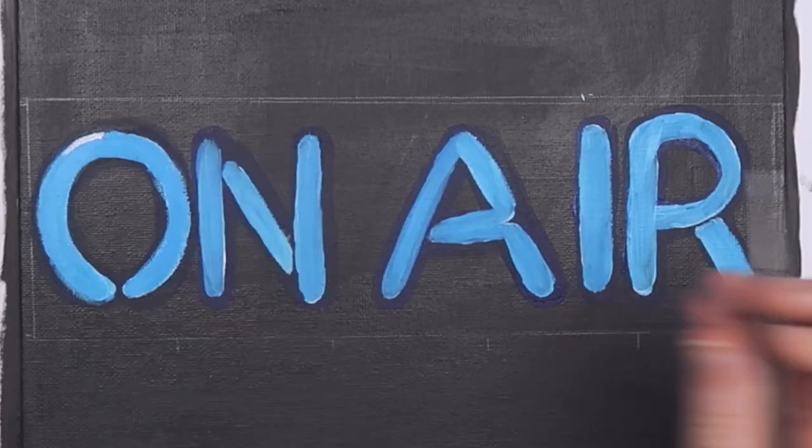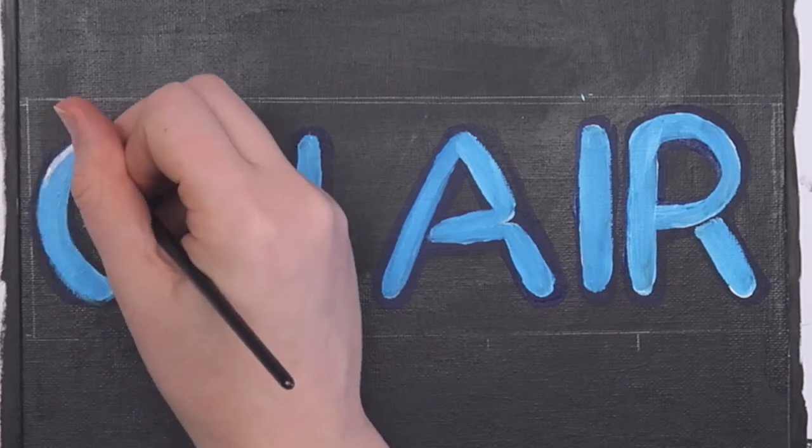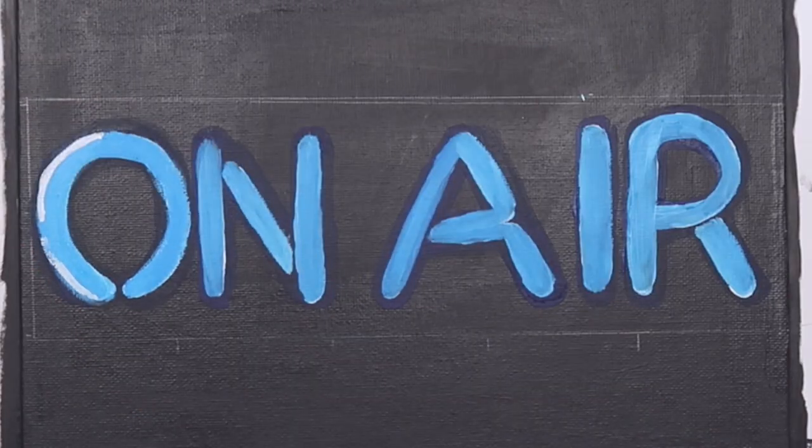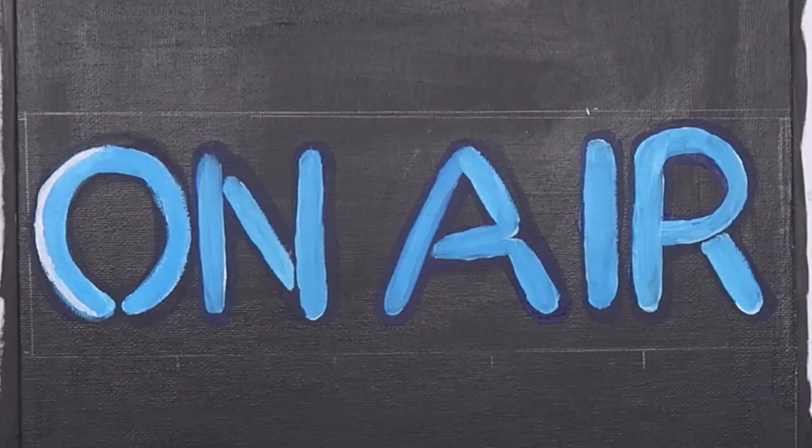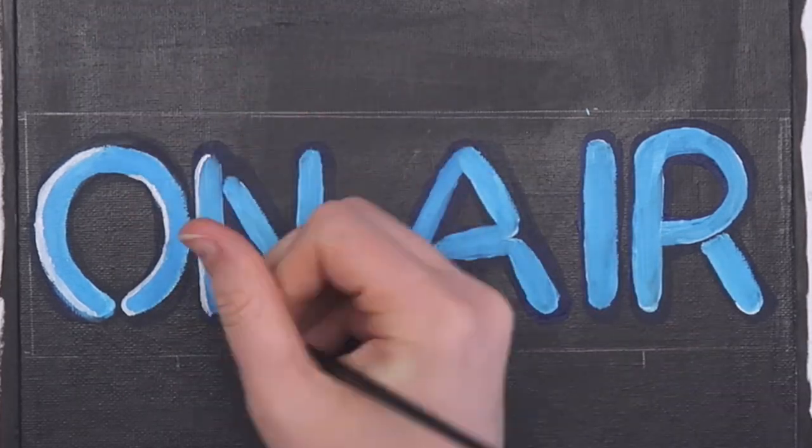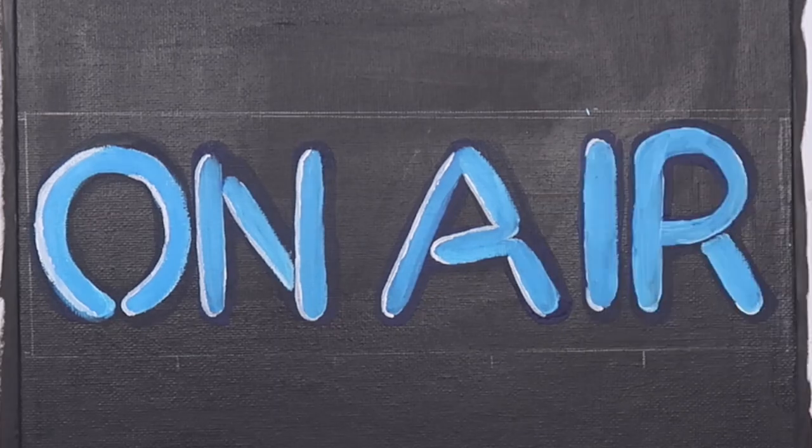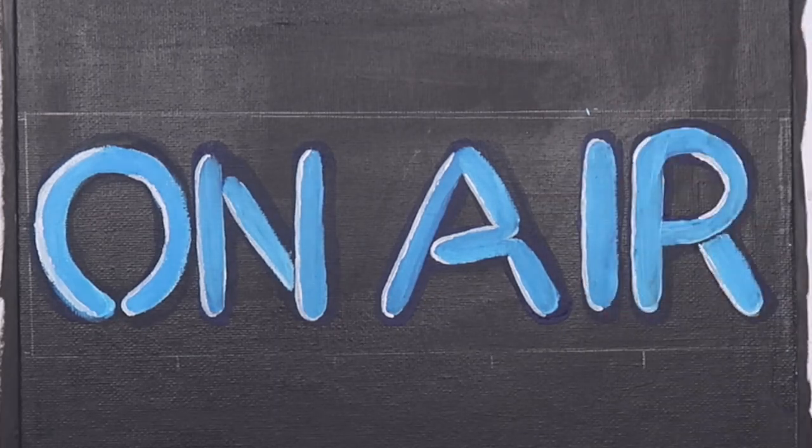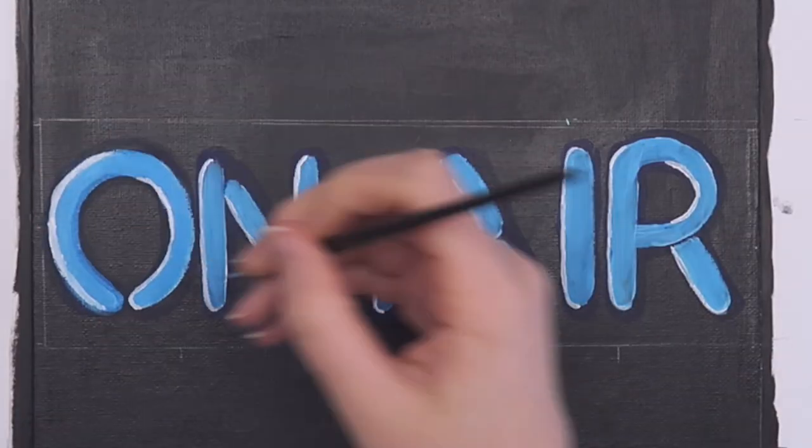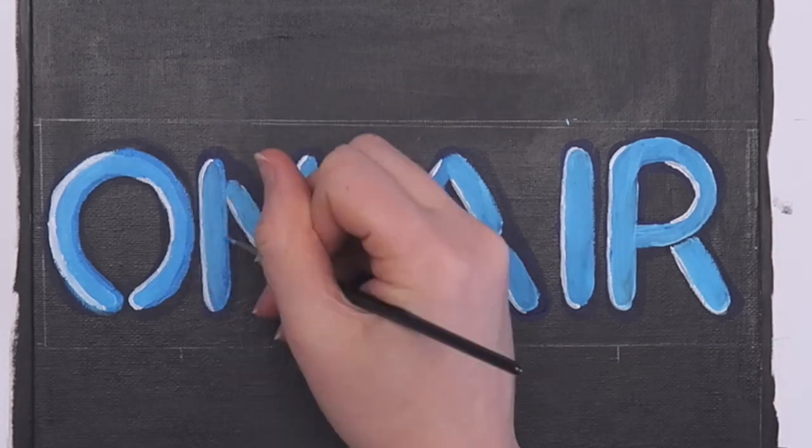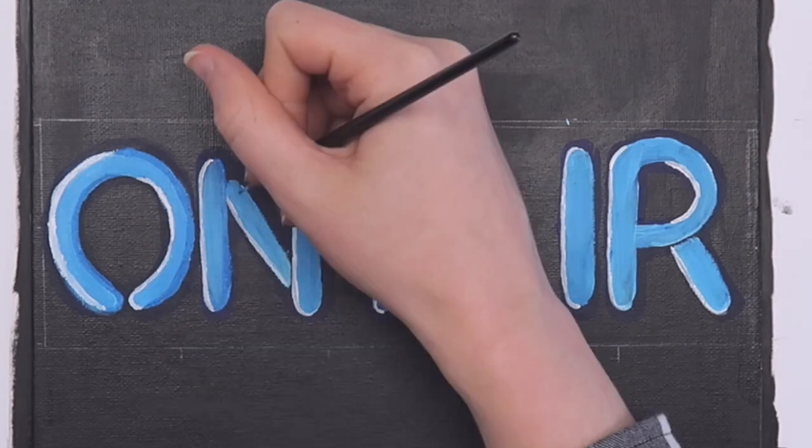Once all the letters are dry, use a small paintbrush dipped in white paint to add highlights to the left side of each letter. Then, mix a color that's slightly darker than the letters, and use the same small brush to add shadows to the right side of each letter.